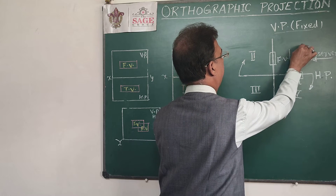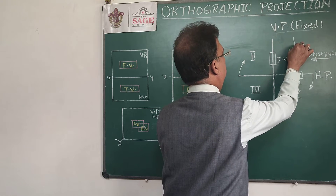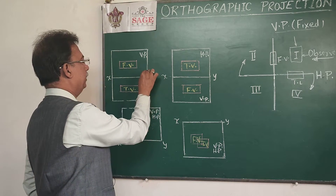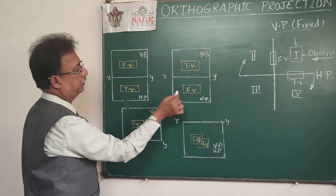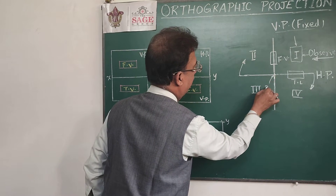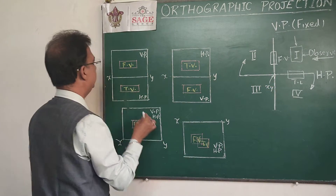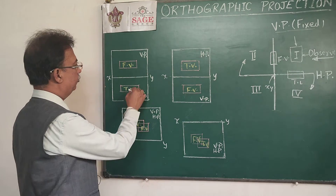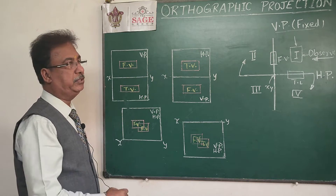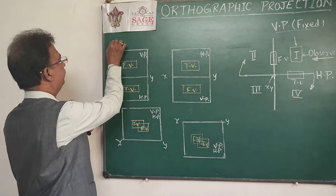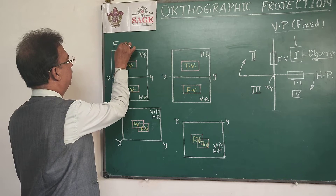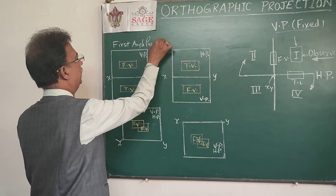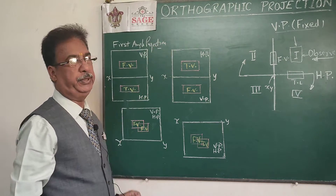If I want to plot the object on my drawing sheet, this line will be our reference line — the intersection of HP and VP. Above XY will be the vertical plane and below it will be the horizontal plane, so the front view will be above and the top view will be below. This is known as first angle projection.